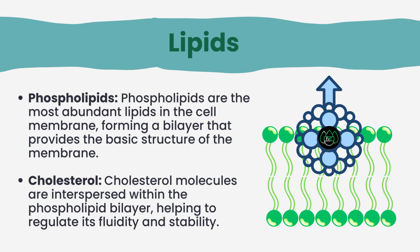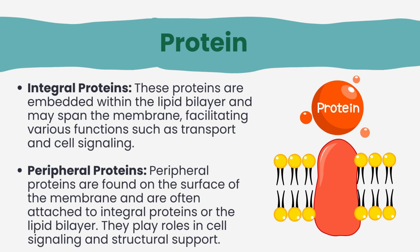Proteins in the cell membrane fall into two categories: integral and peripheral. Integral proteins are embedded within the lipid bilayer and can traverse the entire membrane, facilitating functions like transport and cell signaling. On the other hand, peripheral proteins are situated on the membrane surface, often attached to integral proteins or the lipid bilayer, playing roles in cell signaling and providing structural support.